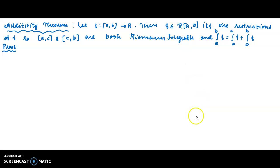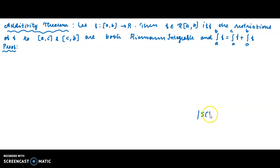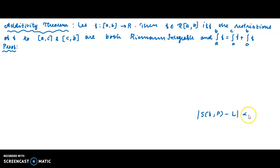f is Riemann integrable on [a, b]. For all partitions, given epsilon greater than 0, for all partitions with norm T less than delta, we have to prove that the modulus of S(f, P) minus L is less than epsilon.